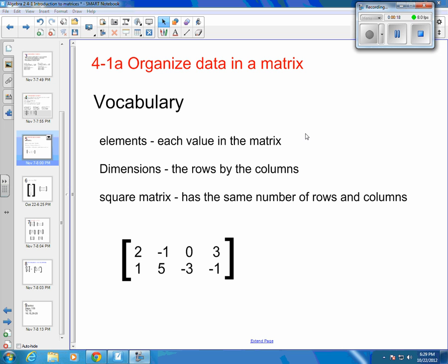Now let's talk about what all these different pieces of the matrix are called. You have elements. So 2 would be an element. It's a value in your matrix. Negative 1 would be an element. 0 would be an element. 3 would be an element. Negative 3 would be an element. 1 would be an element.